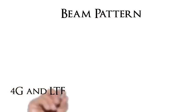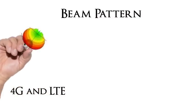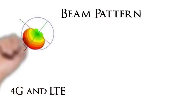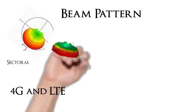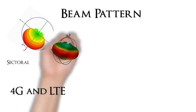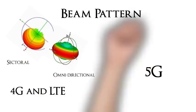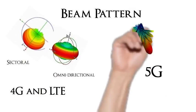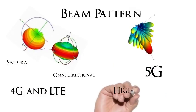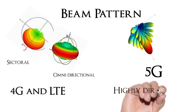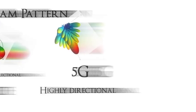Number 9: The beam pattern. For 4G and LTE, the main types of beams used are the sectoral beam and the omnidirectional beam. For 5G, the beam that is used is a multi-beam, highly directional beam.